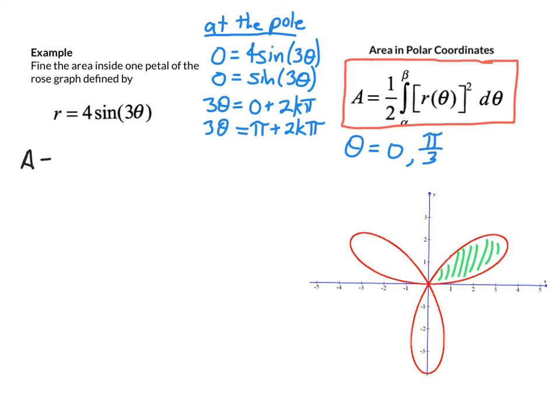Now we can set this up and state that the enclosed region is 1 half times the integral from 0 to pi over 3 of the function 4 sine of 3 theta squared d theta. If we can find the antiderivative and evaluate it, that's going to be our answer.